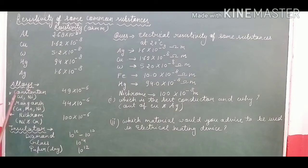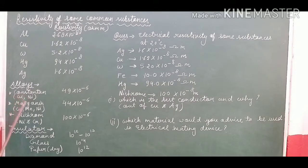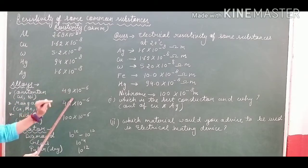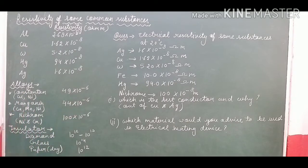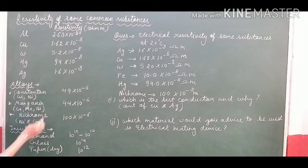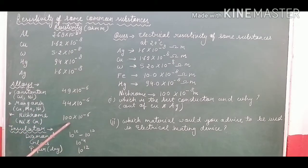Let's talk about alloys. The first alloy I have written is constantan, whose composition is copper and nickel. Its resistivity is 49 × 10⁻⁶. Manganin — its composition is copper, manganin and nickel — is 44 × 10⁻⁶. Next is nichrome, whose composition is nickel and chromium, and its resistivity is 100 × 10⁻⁶.